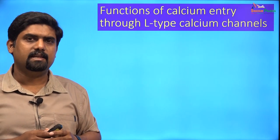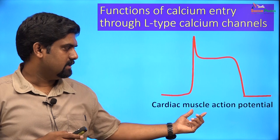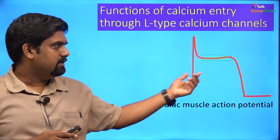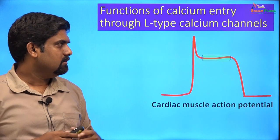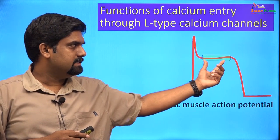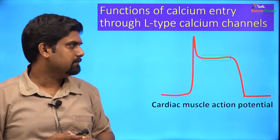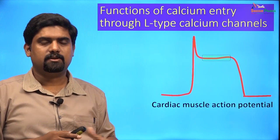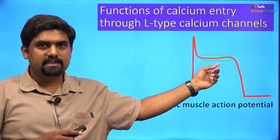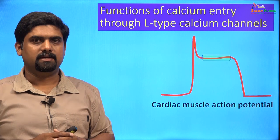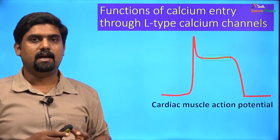L-type calcium channels are present in cardiac muscle, where they mediate the plateau phase or phase II of the cardiac muscle action potential. Because the calcium entry is long lasting, phase II is prolonged and the cardiac muscle action potential has a wider duration. Calcium channel inactivation is responsible for the refractory period of the heart. The calcium entering through L-type channels during the plateau phase is also important for cardiac muscle contraction.